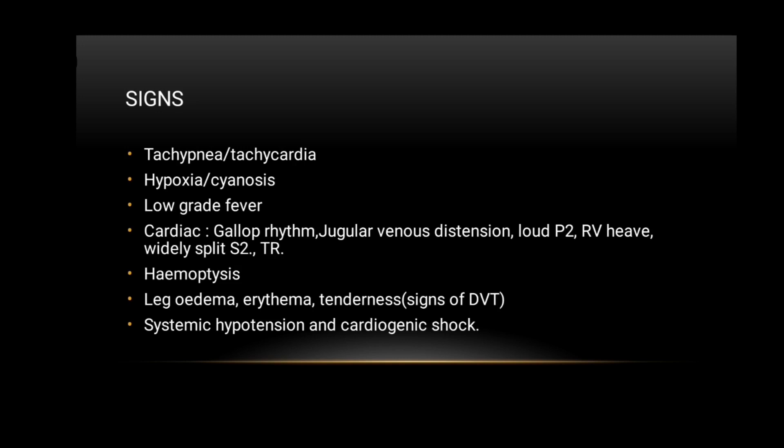Signs of pulmonary embolism include tachypnea, tachycardia, hypoxia, cyanosis, and low-grade fever. On cardiac examination, we may find gallop rhythm, jugular venous distension, loud P2, right ventricular heave, widely split S2, and tricuspid regurgitation. The patient can also present with hemoptysis and signs of DVT such as leg edema, erythema, and tenderness. Systemic hypotension and cardiogenic shock can be present if the embolus is massive.